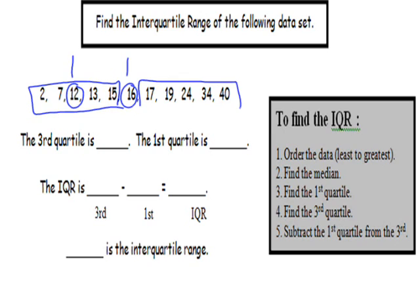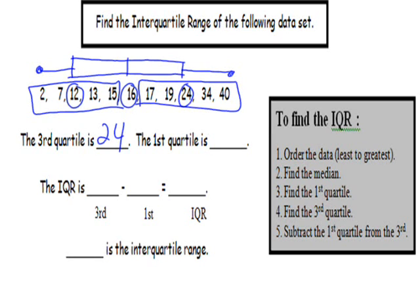We're going to look at the top 50%, the upper 50%. Our third quartile would be 24. So you could go ahead and make your box. Make your whiskers. So the third quartile is 24. The first quartile is 12. And if we subtract the two, our interquartile range for that data would be 12.